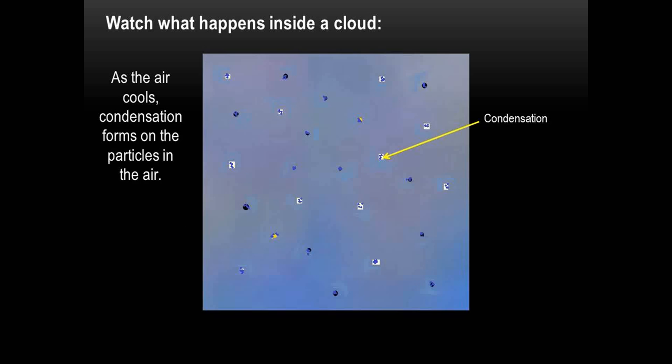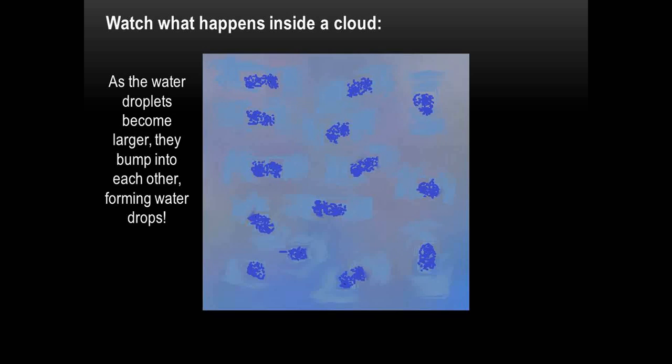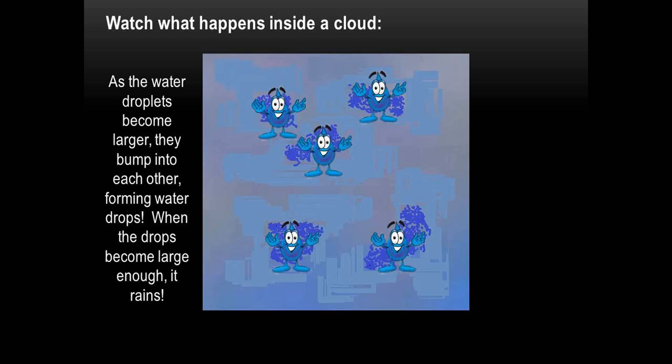As the air cools, condensation forms on the particles in the air. As the water droplets become larger, they bump into each other, forming water drops. When the drops become large enough, it rains.